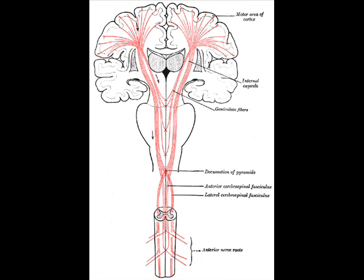In summary, the blood supply of the internal capsule is as follows. Anterior limb: lenticulostriate branches of the middle cerebral artery, superior half; and recurrent artery of Heubner off of the anterior cerebral artery, inferior half. Genu: lenticulostriate branches of the middle cerebral artery. Posterior limb: lenticulostriate branches of the middle cerebral artery, superior half; and anterior choroidal artery, inferior half. As in many parts of the body, some degree of variation in the blood supply exists.